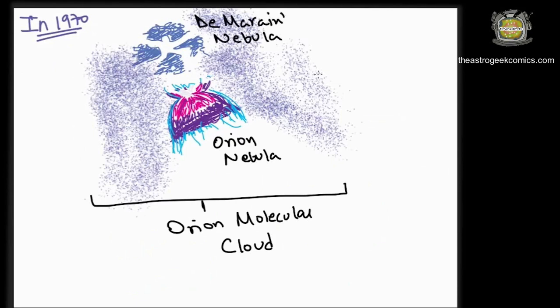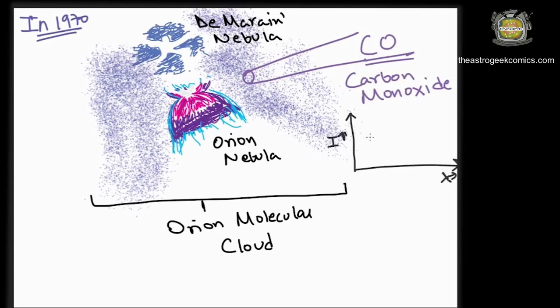In the year 1970, Wilson and others discovered carbon monoxide molecules in the molecular clouds of the Orion Nebula complex for the first time by observing its spectra, which is in the radio wavelength, includes a line of 2.6 mm.